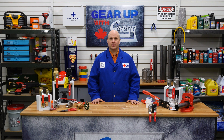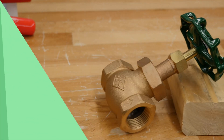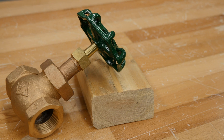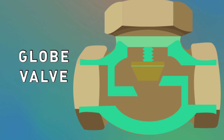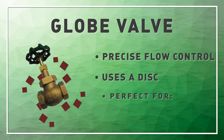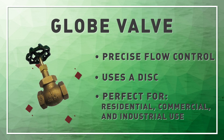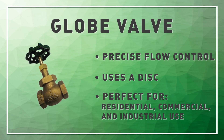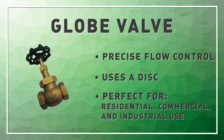Ball valves are great for quickly stopping and releasing the flow of your system. But what if you need precise control of the flow? If that's the situation, a globe valve is what you are looking for. As you can see here, the system uses a disc which goes up and down depending on which way you turn the handle. When the system is closed, the disc sits on the bottom, sealing off the flow from going forward. So unlike the ball valve, the user will have precise control of the system's pressure depending on where the disc is positioned. You will also notice a drop in pressure compared to a ball valve due to the 90 degree angle the flow passes through. This makes globe valves perfect for residential, commercial, and industrial use.